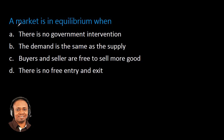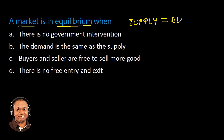So first, what is market equilibrium? Market equilibrium is a market state where the supply in the market is equal to the demand in the market. That is simply what market equilibrium is.